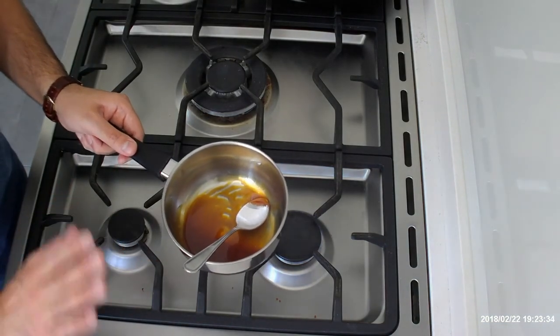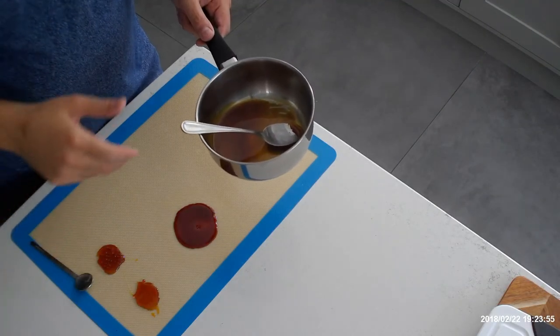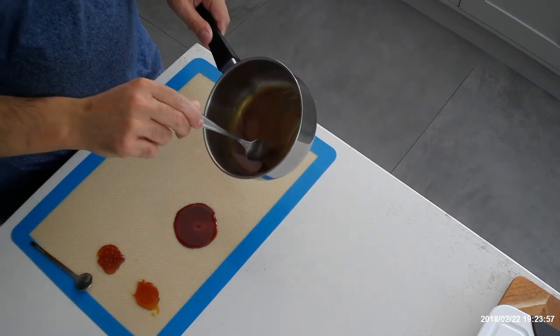Okay so that's with icing sugar so we'll take it over to the mat and we'll have a look what it looks like. Okay so we're back at the mat, we've got the caramel we've made with icing sugar.